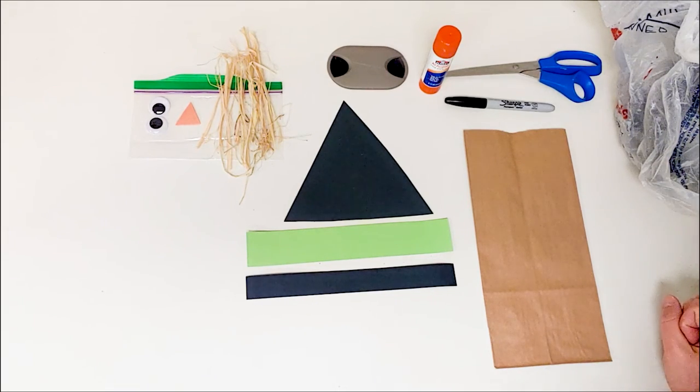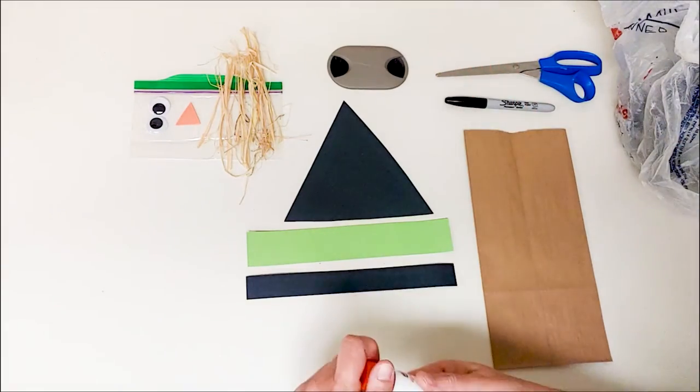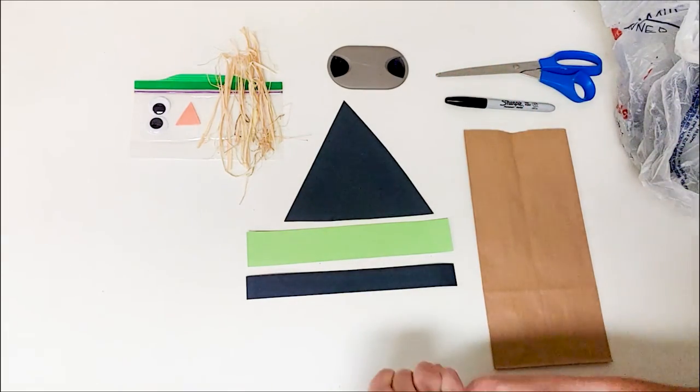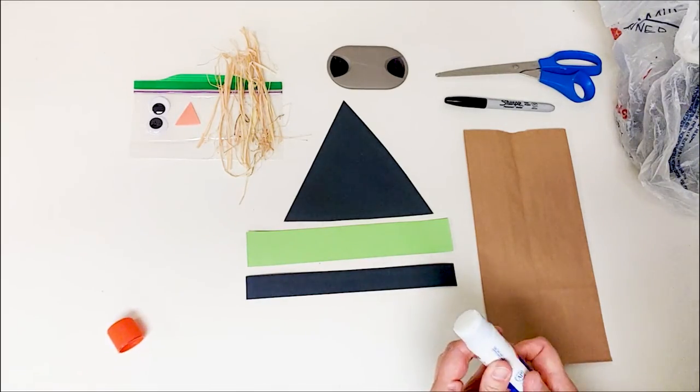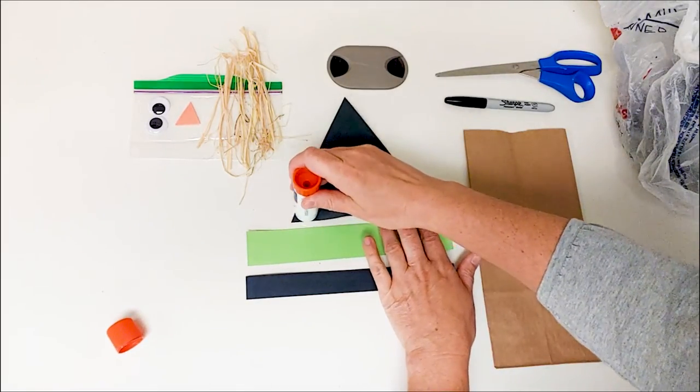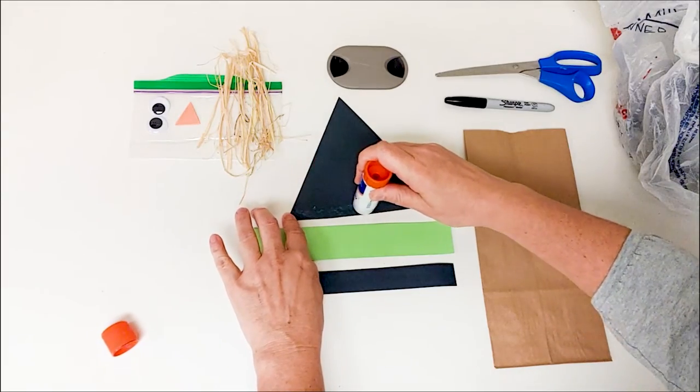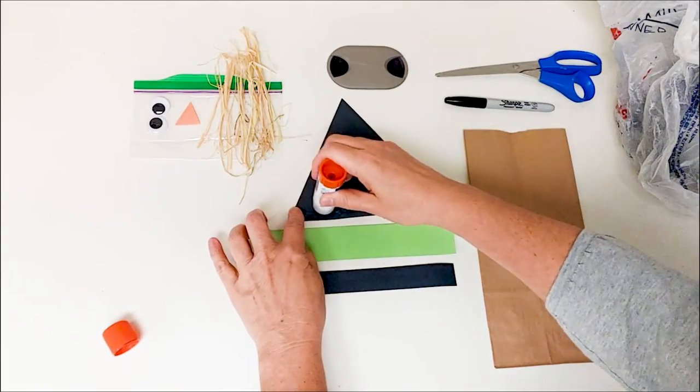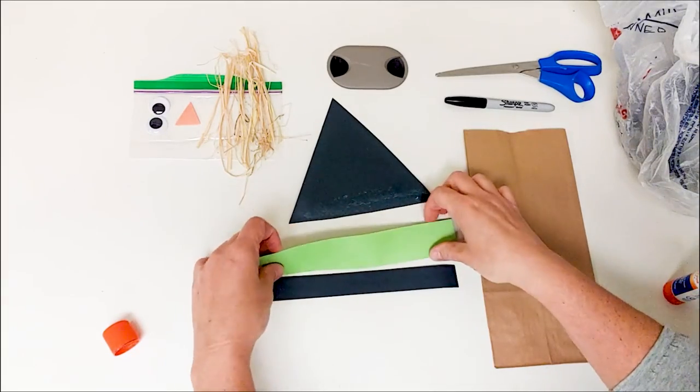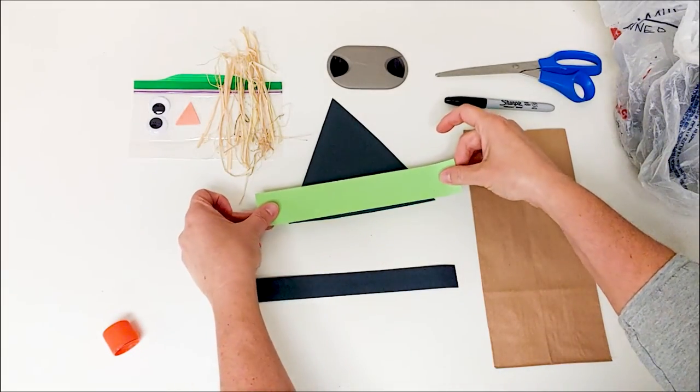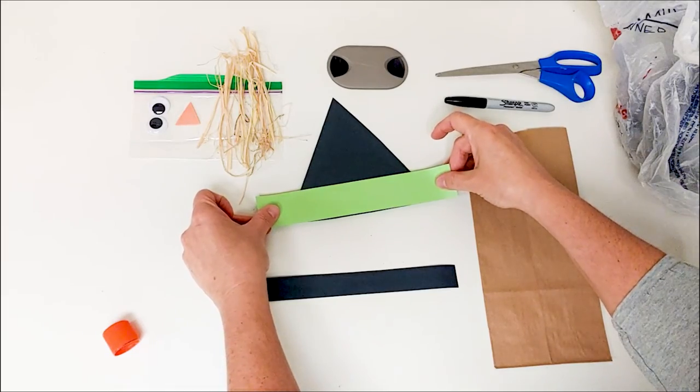Okay, so the first thing we're going to do is we're going to assemble the hat. So we're gonna take our glue stick and we are going to put glue on the bottom of the hat here. And now we are going to take our green piece and we're going to put it right about in the middle of the green piece, we're going to put it right on the bottom of the hat there.